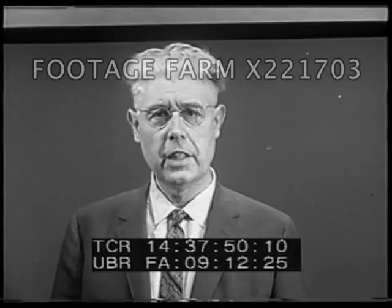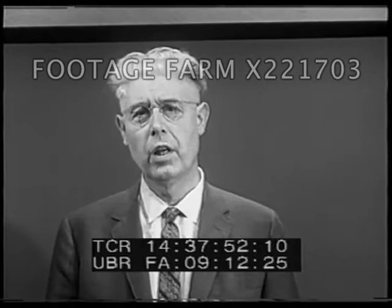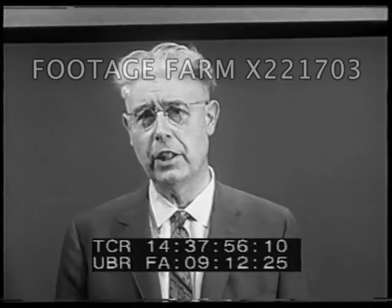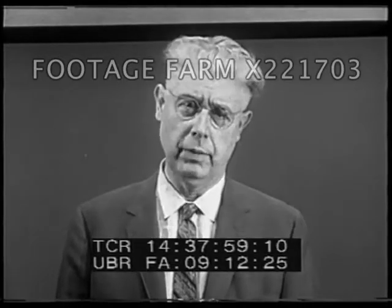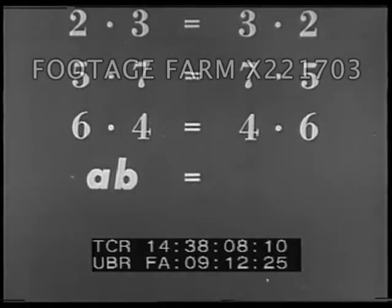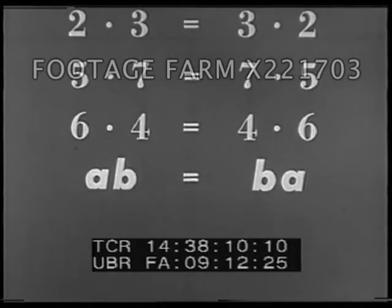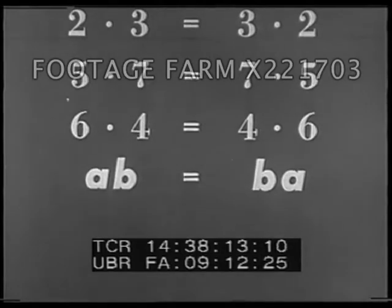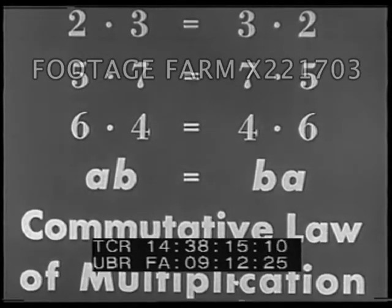There is another kind of pattern, too, one that sums up thousands upon thousands of separate observations in one all-inclusive statement. Such statements as these can all be summed up in the simple pattern A times B equals B times A. We call it the commutative law of multiplication.